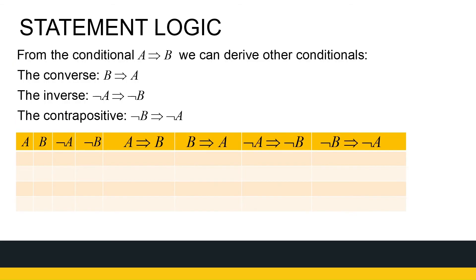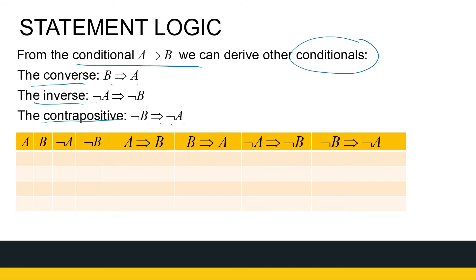From a conditional statement A→B, we can derive related conditionals: the converse (B→A), the inverse (¬A→¬B), and the contrapositive (¬B→¬A). These are distinct forms of the original conditional.